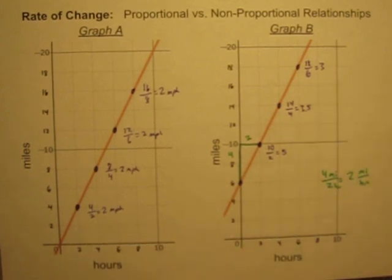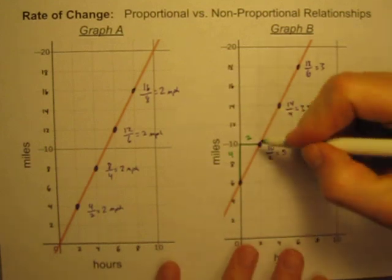So I can't just look at the coordinates of a single point when it's a nonproportional relationship. I have to look at how the values are changing from one point to the next.